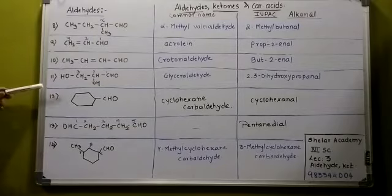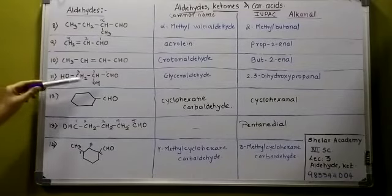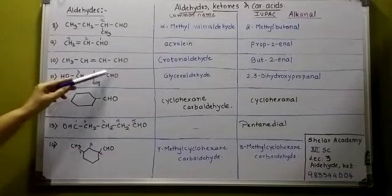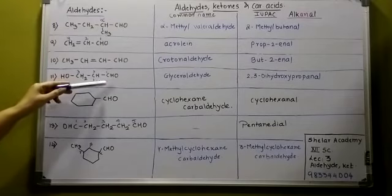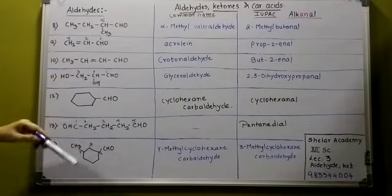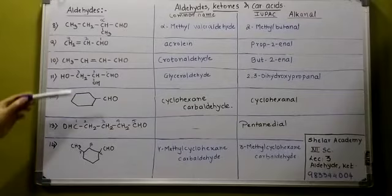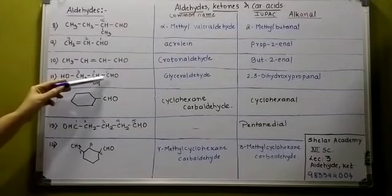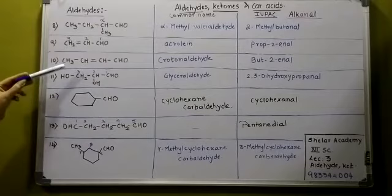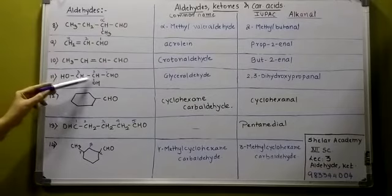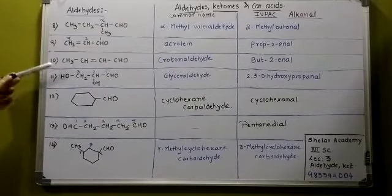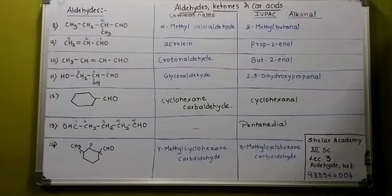Now, if you have this structure — the OH of glycerol has been replaced by CHO — so it becomes glyceraldehyde. That is the common name. The IUPAC name, giving preference to the CHO group, counting 1, 2, 3 — it is 2,3-dihydroxypropanol.